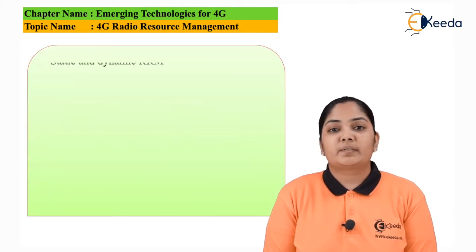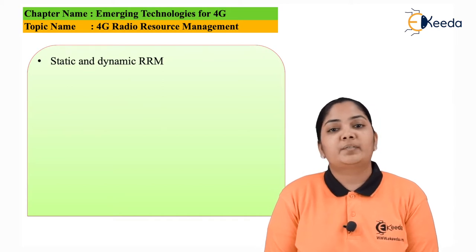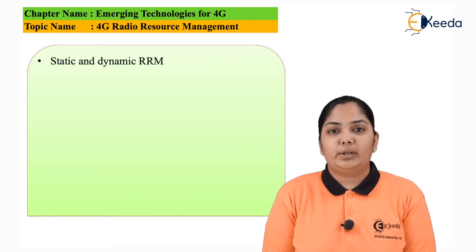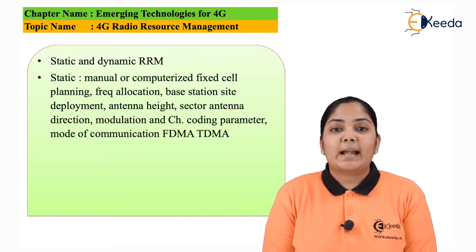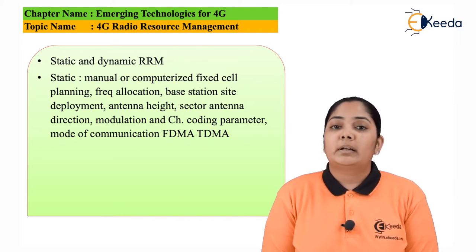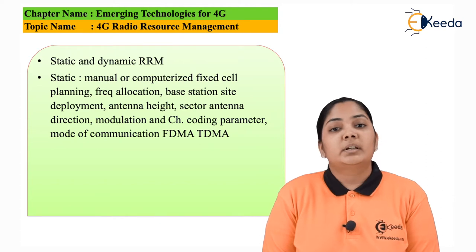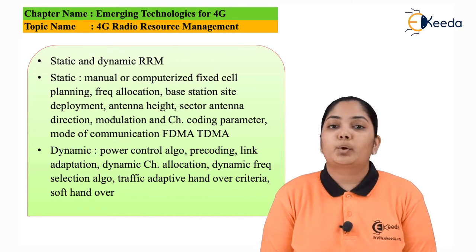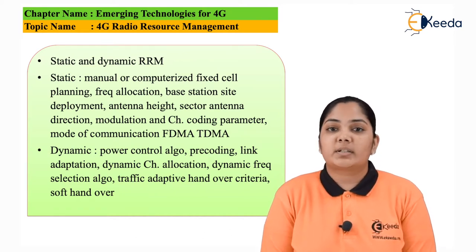There are basically two types of radio resource management. The first is called static radio resource management, and the other is called dynamic radio resource management. Static management provides parameters that are previously fixed — for example, the number of cells, the channels available, or the modulation schemes.